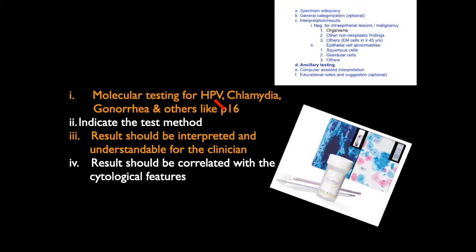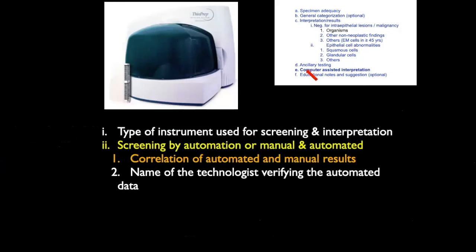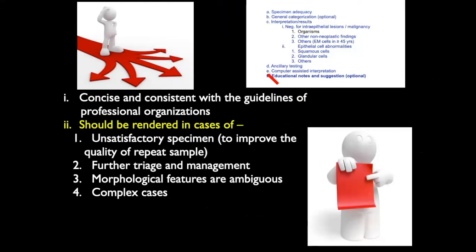Coming to ancillary testing — it can be molecular testing for HPV, Chlamydia, gonorrhea, and for p16. Whenever you do a test, indicate the test method, and results should be interpreted in language understandable to the clinician and correlated with cytological features. When using instruments, mention the type of instrument and technology used — for example, ThinPrep. Automated data must be verified, identifying which person handled each test. Educational notes, the last component, should be concise, consistent with guidelines by professional organizations, and used in cases of unsatisfactory specimens, ambiguous morphological features, or complex cases.